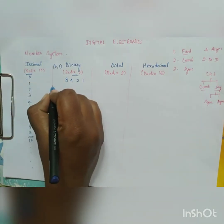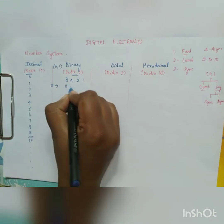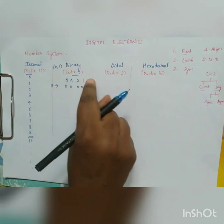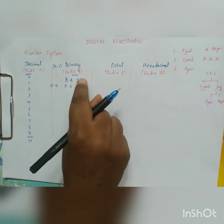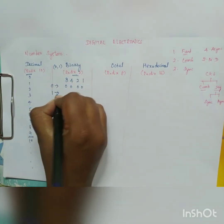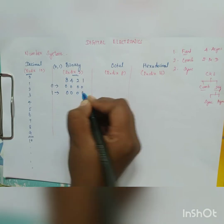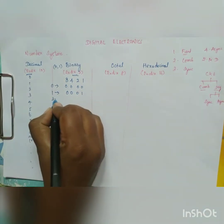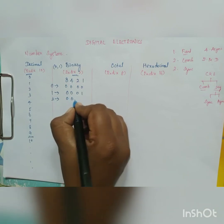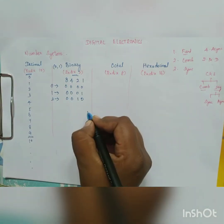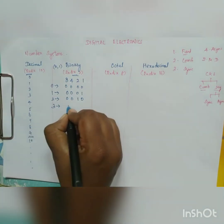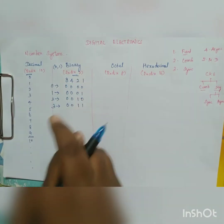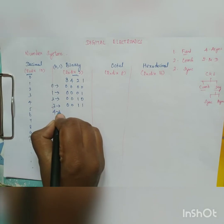In the 8421 code: decimal 0 is 0000. Decimal 1 is 0001. Decimal 2 is 0010. Decimal 3 is 0011, because 2 plus 1 is 3.